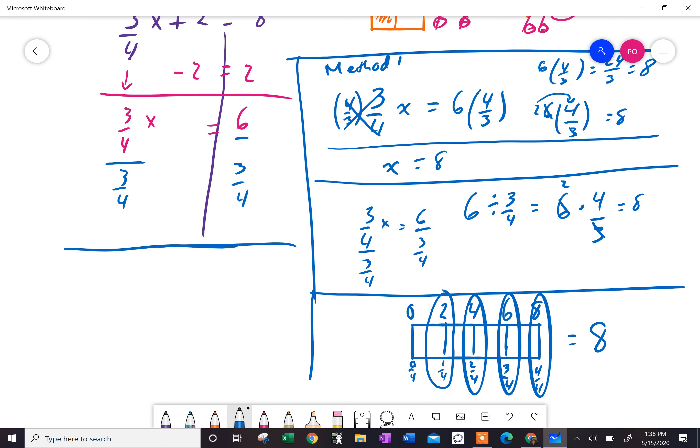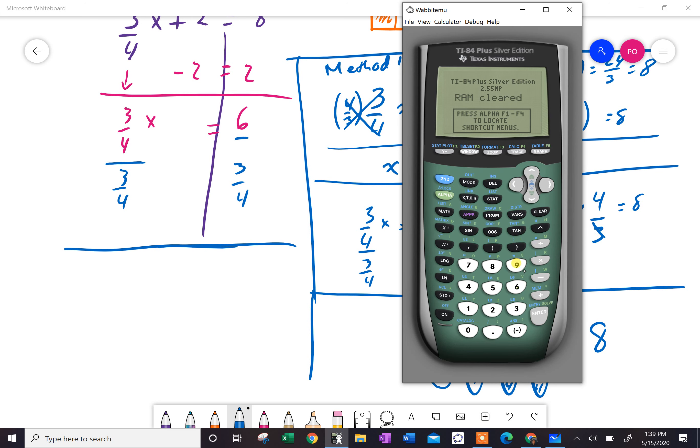And then, obviously, the easiest thing is just to do this. Six divided by three-quarters. Now, here's the problem. I'm not sure. See, you use a calculator. You might end up having problems.